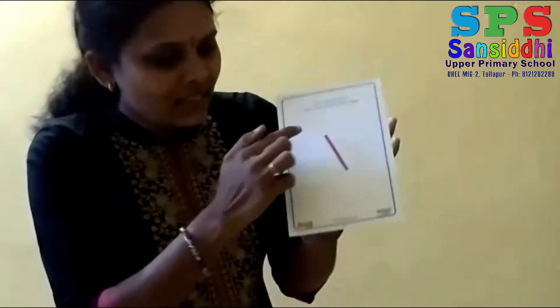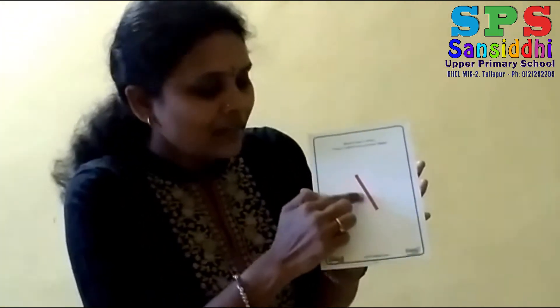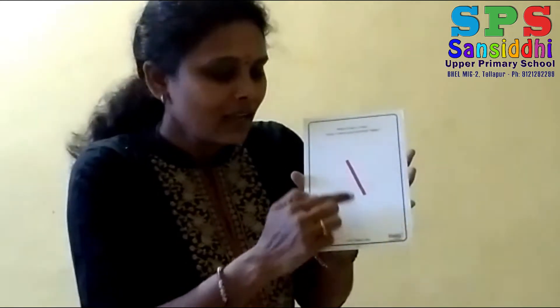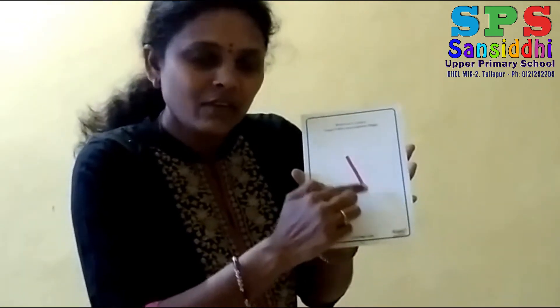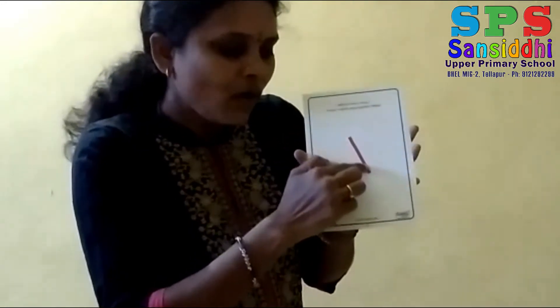I will show you the left slanting line. Which line is this? Tell me kids. This is left slanting line — it is called left slanting line. Right to down left. It is called left slanting line.